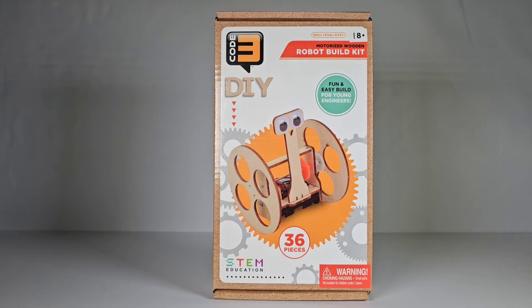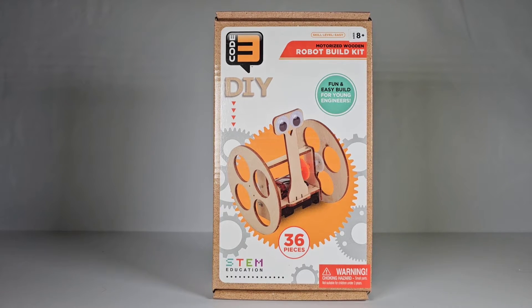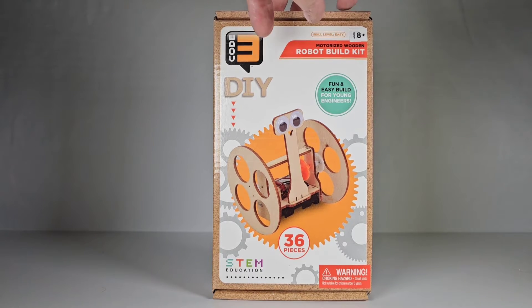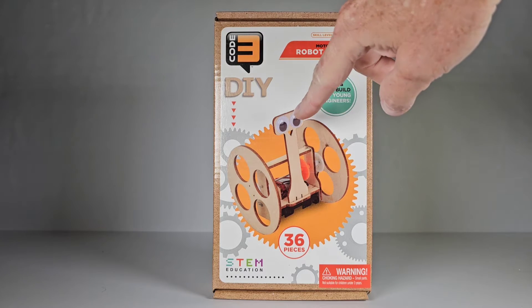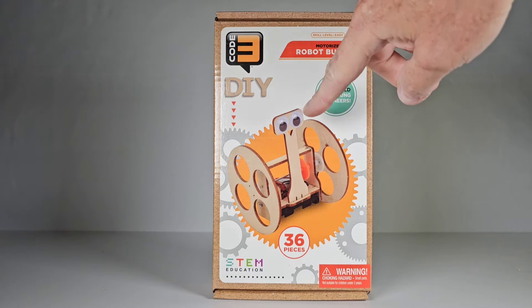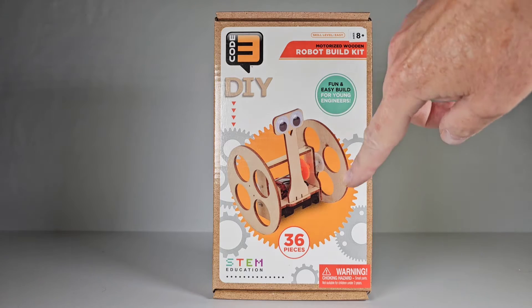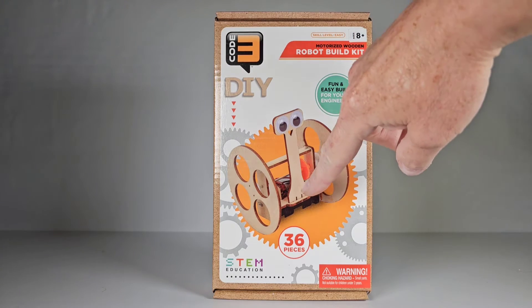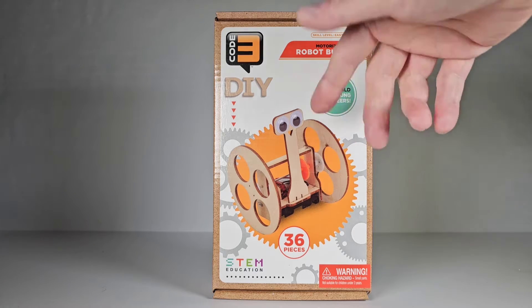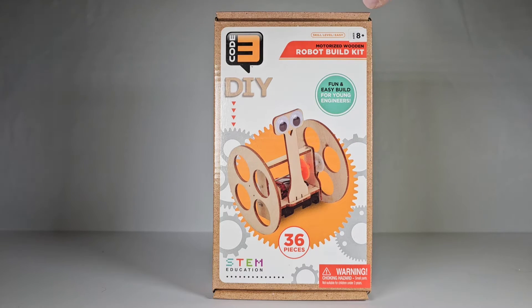Hey everybody, so I was at the hobby shop today and I found this little thing. It's a neat little kit, the robot build kit from a company called Code 3. It's just a very simple thing, made of wood. You just glue on the little googly eyes for his face, and it only has 36 pieces, so it doesn't have a lot of pieces to it. There's a little motor in there and it looks like a battery case.